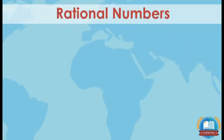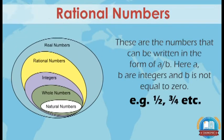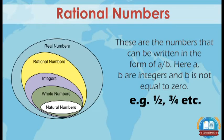The next component is rational numbers. These are the numbers that can be written in the form of A/B, where A and B are integers and B is not equal to 0. Example: 1/2, 3/4, etc.